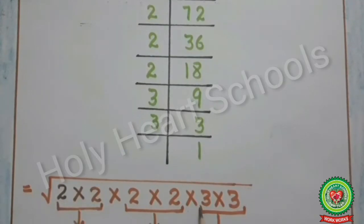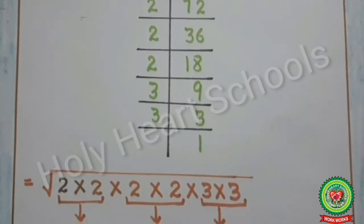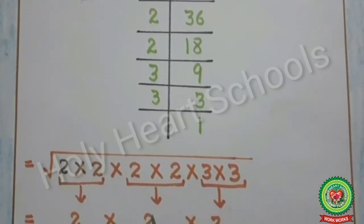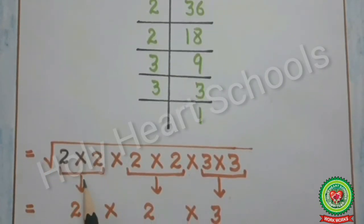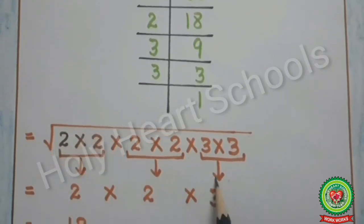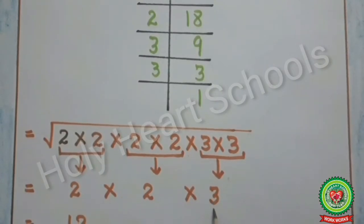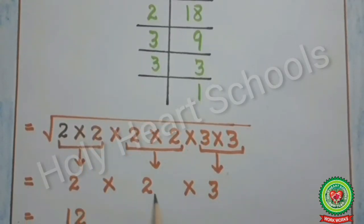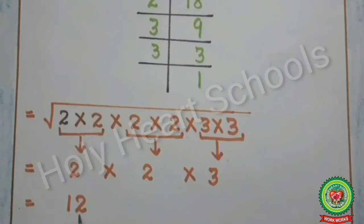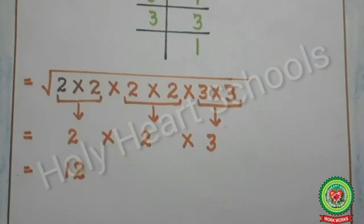The second step is to write down all the prime factors under the symbol of square root, as written here. The next step is to make pairs of the prime factors. Then we take one number from each pair: 2 from the first pair, 2 from the second, and 3 from the third pair. After that we multiply all the numbers: 2×2=4, 4×3=12. That is the required square root of 144.